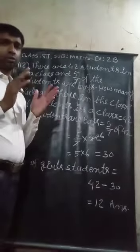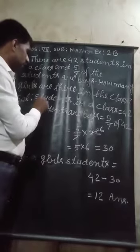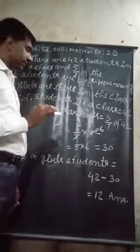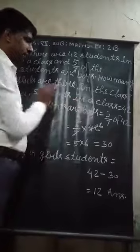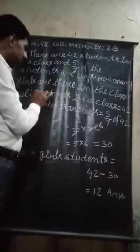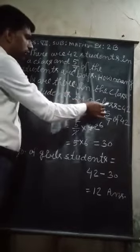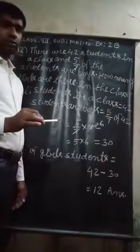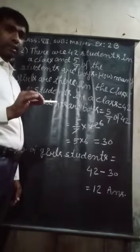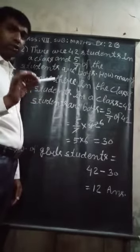So, let us come to the solution section. In solution form, first of all we have to write that students in a class equal to 42. Students in a class, how many? 42.